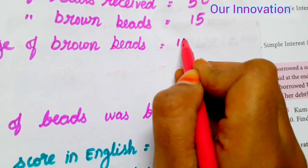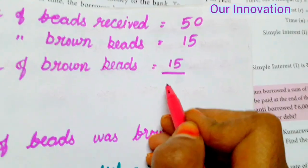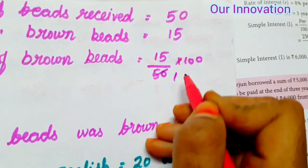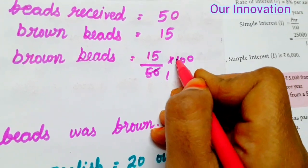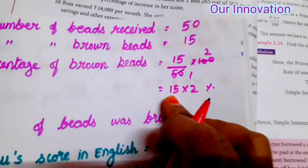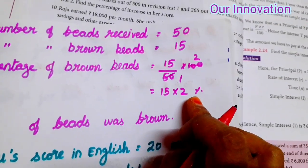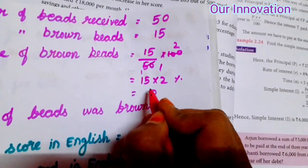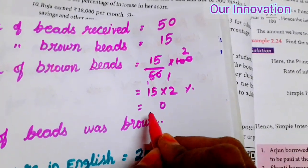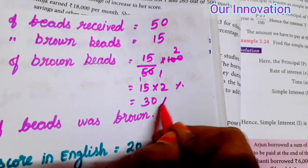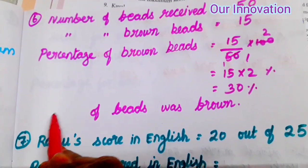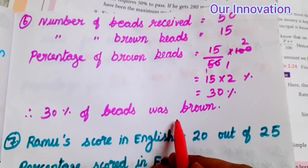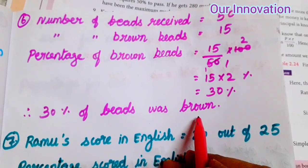Percentage of brown beads is equal to 15 by total 50 into 100. If 1 into 50 is 50, 2 into 50 is 100. So 2 into 15, we multiply: 1 into 5, 2's are 10, balance 1. 1 into 2 is 2, 2 plus 1 is 3. So 30 percentage.